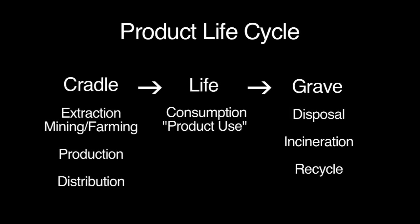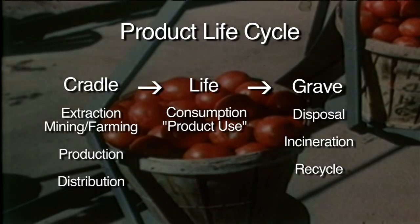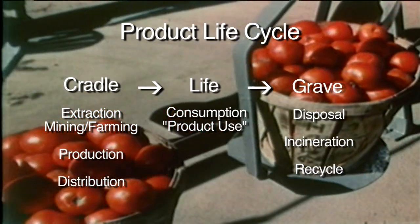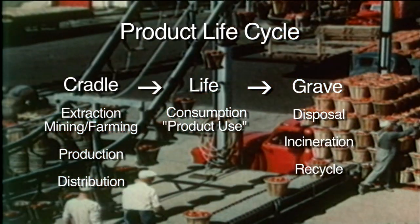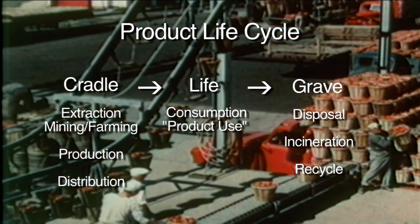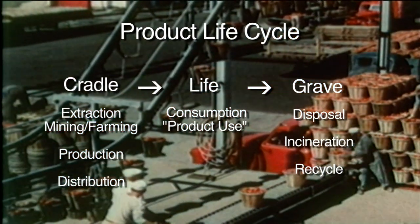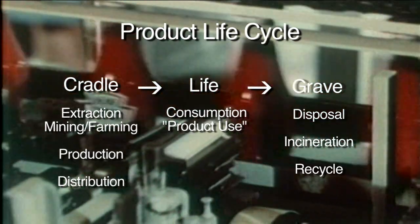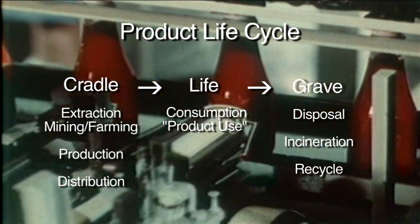Of the three parts of the product life cycle, most of the energy is actually used when it's created. Mining, farming, and transportation of these raw materials, as well as the energy to refine these raw materials, is where most energy is expended, including the energy to manufacture and assemble and ship the final product.